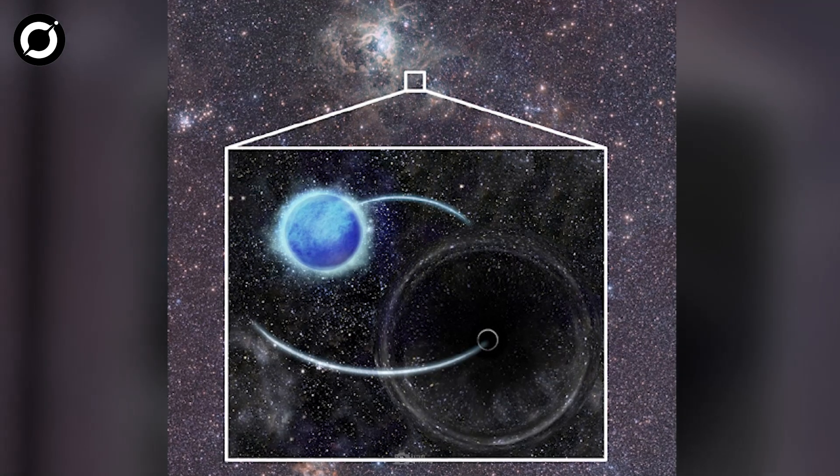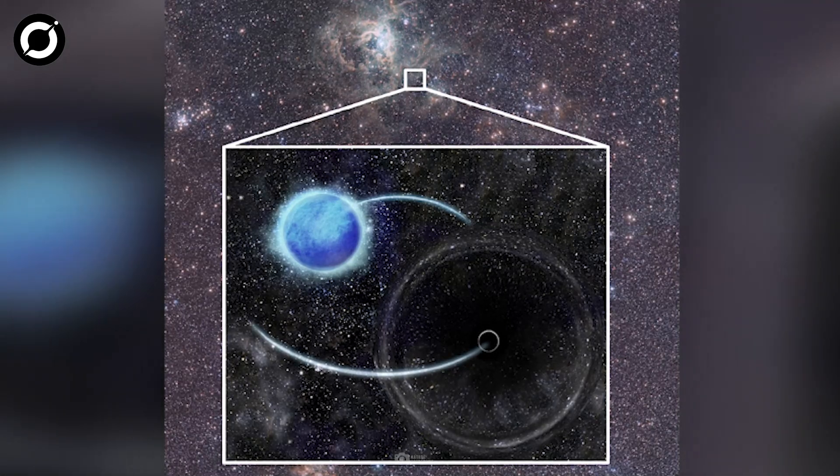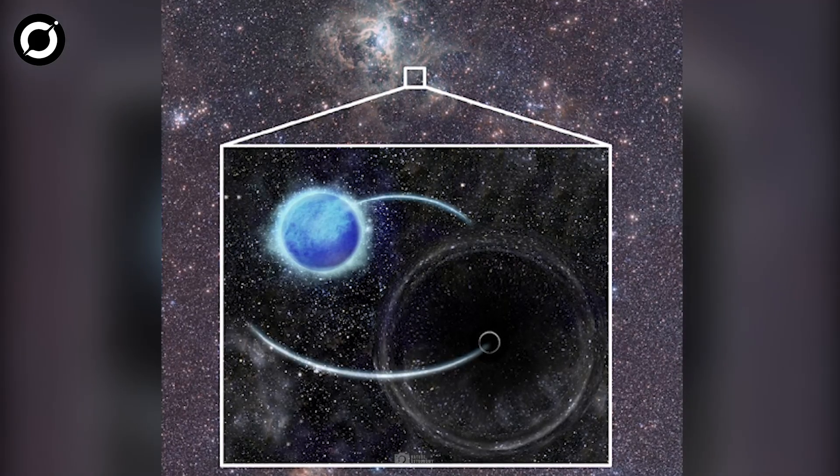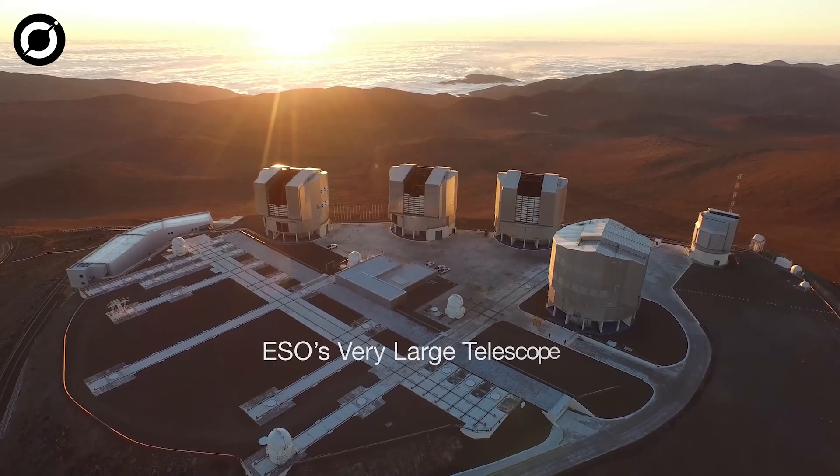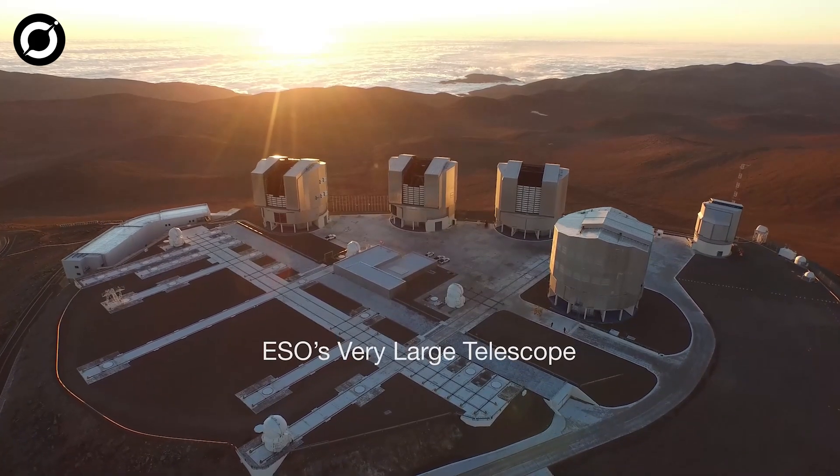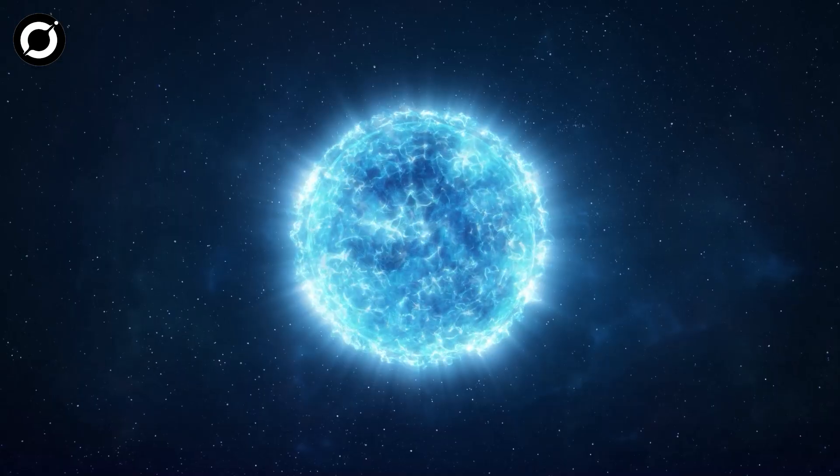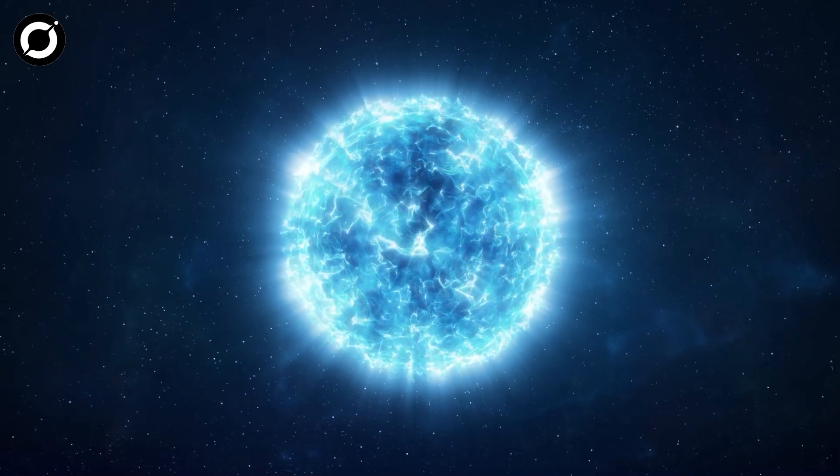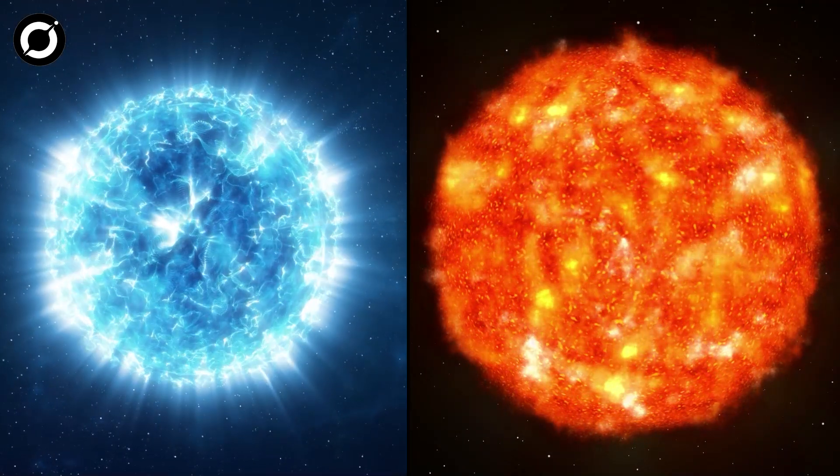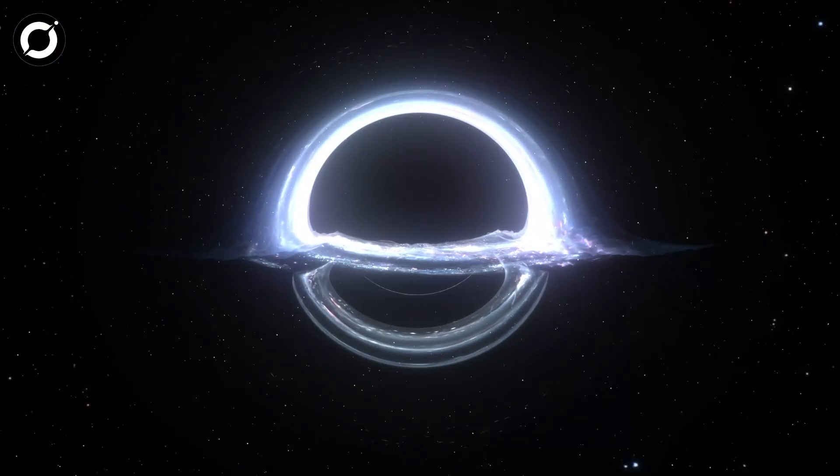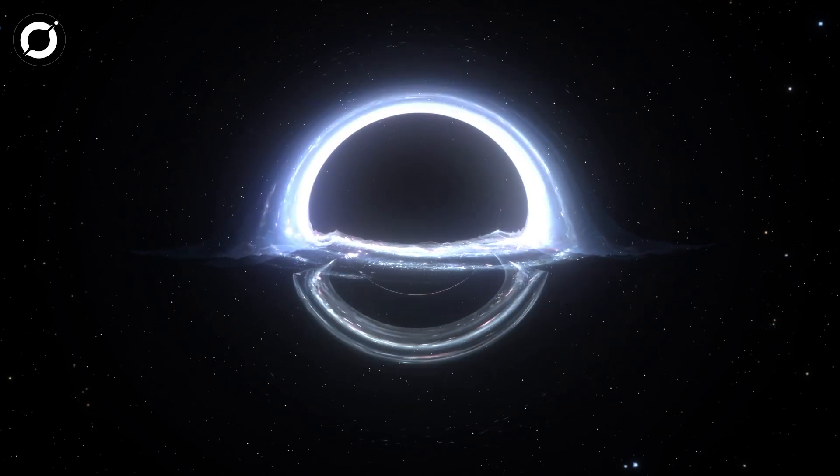Dubbed the FTS 243, the black hole was discovered from observations obtained by the European Southern Observatory's Very Large Telescope, the VLT. An extremely luminous and hot blue star with a mass about 25 times that of the Sun orbits with this black hole in a stellar marriage.